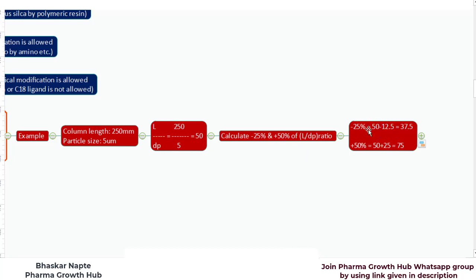Minus 25%: the original ratio is 50, and 25% of 50 is 12.5, so 50 minus 12.5 equals 37.5. Plus 50%: 50% of 50 is 25, and 50 plus 25 equals 75. So the allowed variation in the L/DP ratio is from 37.5 to 75. The original L/DP ratio is 50, but according to this general chapter, you can have the ratio anywhere between 37.5 and 75.